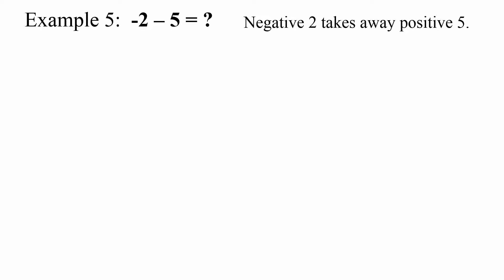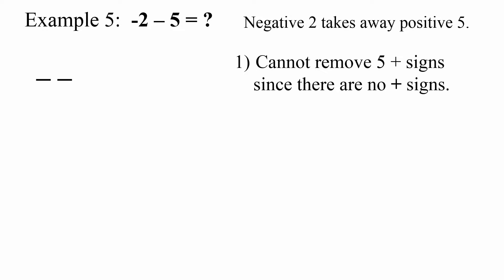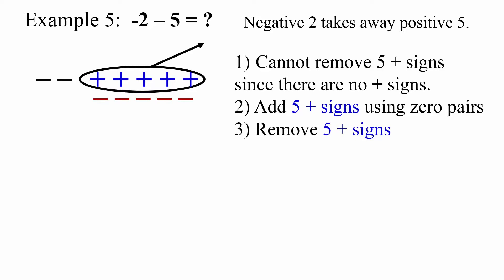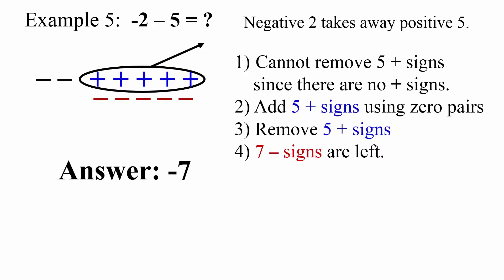Example 5: negative 2 take away positive 5. I have 2 negative. I cannot take away 5 positive signs, so I will add 5 positive signs using zero pairs. Then I remove 5 positive. I am left with 7 negative. My answer is negative 7.